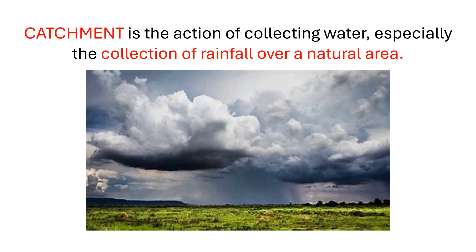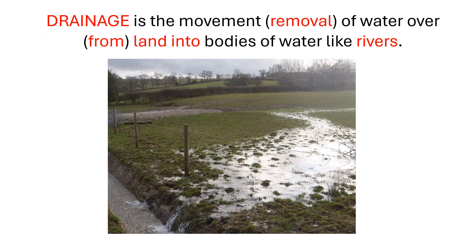Let's begin with the term catchment. Catchment is the action of collecting water, especially the collection of rainwater over a natural area. Drainage refers to the movement of water over land, and that water eventually enters into other bodies of water like rivers. Drainage involves the removal of water from the land into rivers.